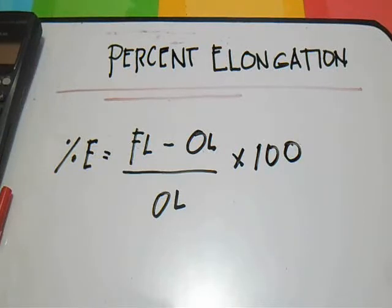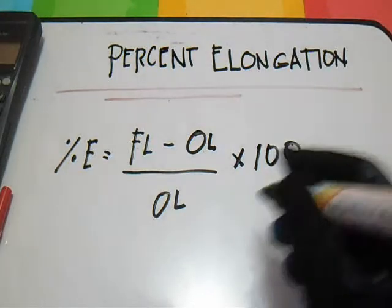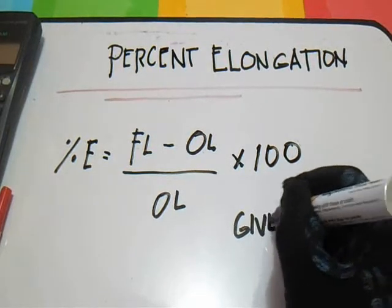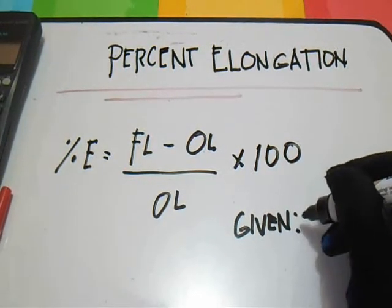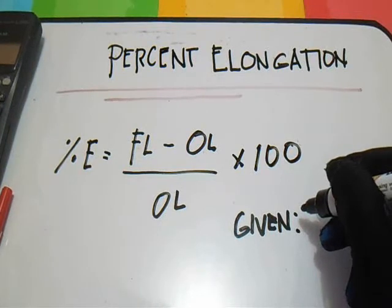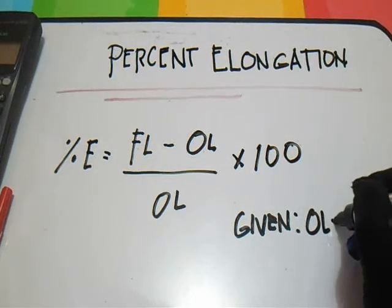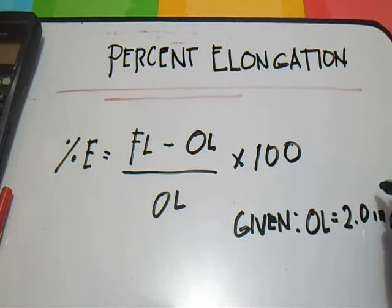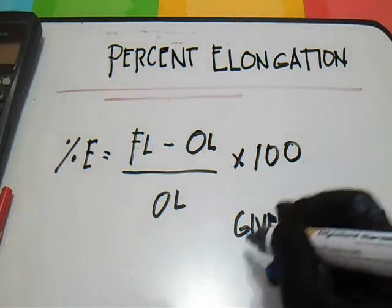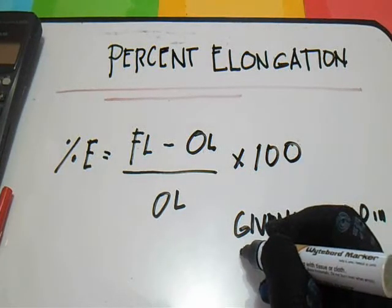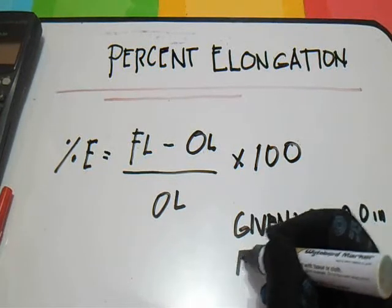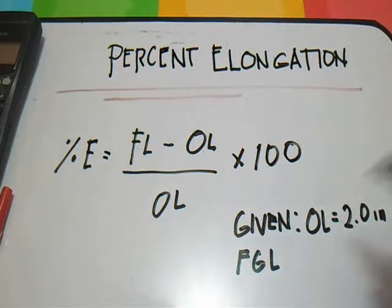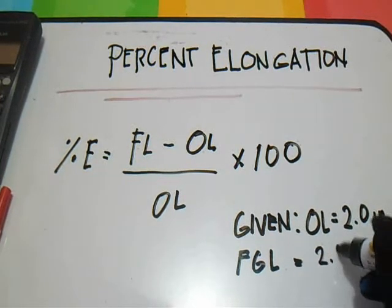Let's work through an example to determine the percent elongation. Our given values are: original length is 2.0 inches, and our final gauge length is 2.6 inches.